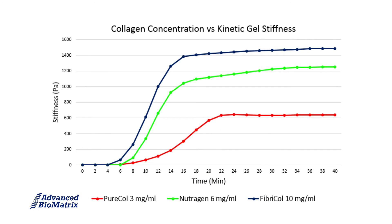This rheology graph shows our testing comparing pure col at 3 mg per ml, Neutrogen at 6 mg per ml, and Fibercol at 10 mg per ml.